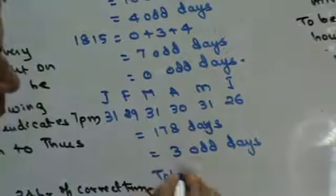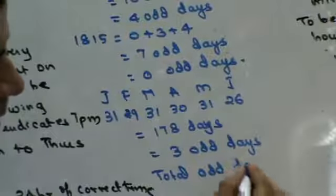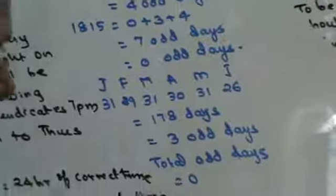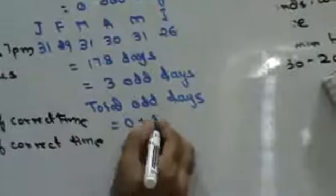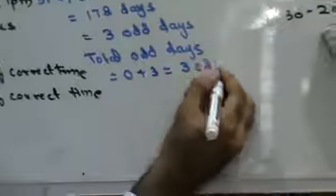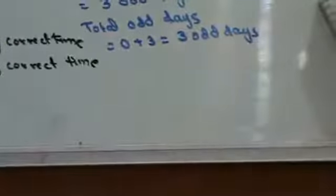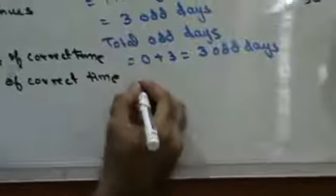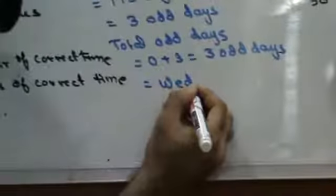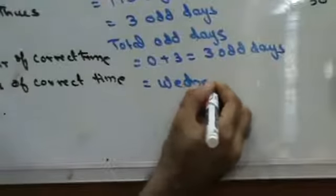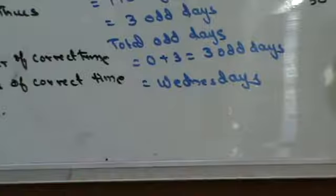Total odd days: 0 (for 1815 years) + 3 (Jan to Jun 26) = 3 odd days. Three odd days corresponds to Wednesday. Therefore, 26th June 1816 was a Wednesday.